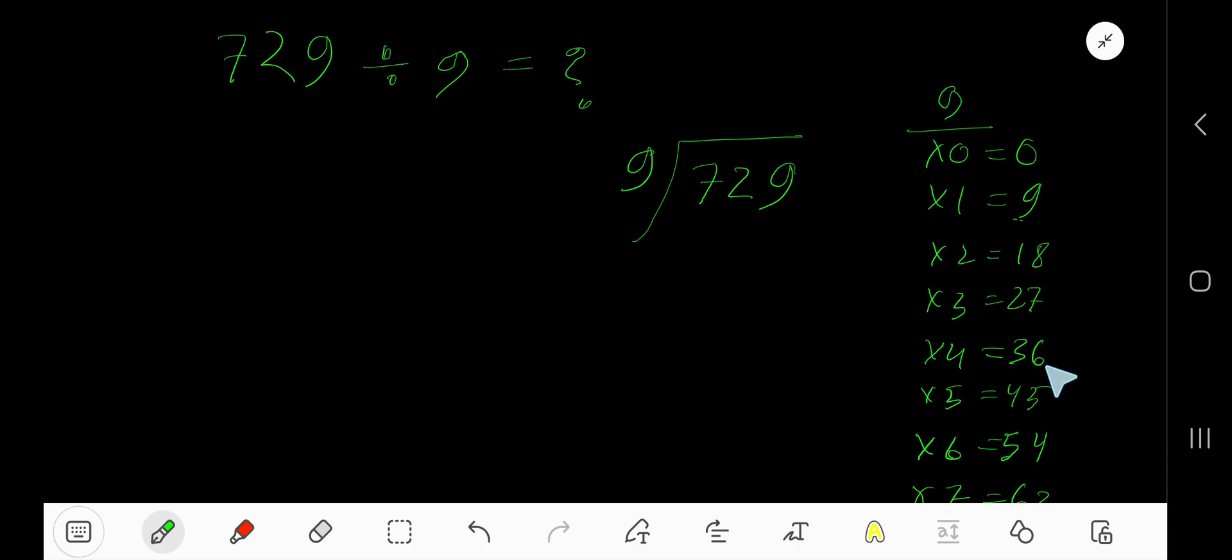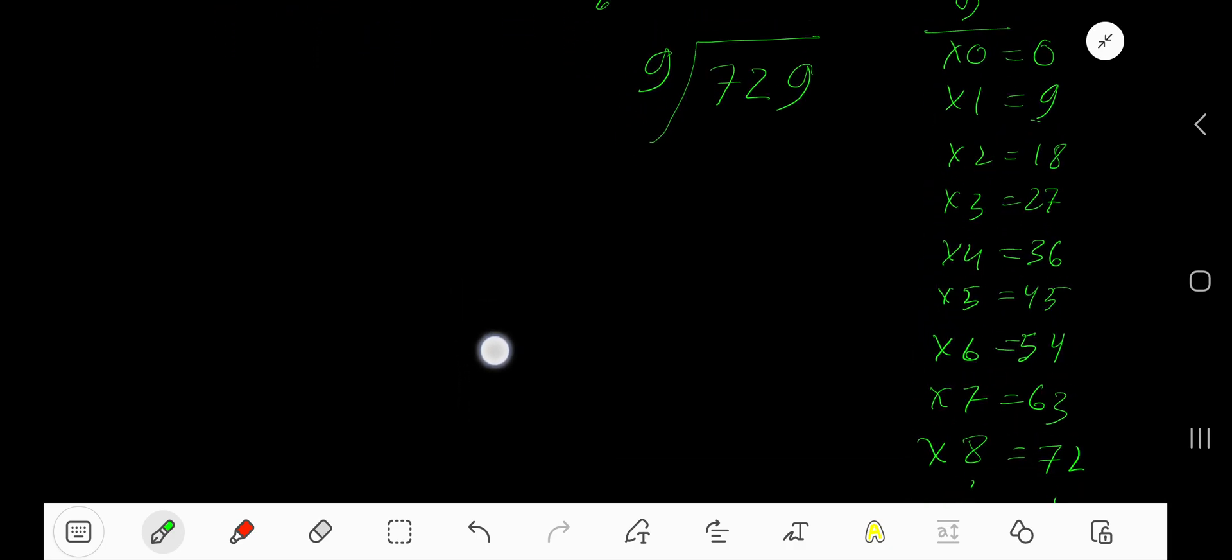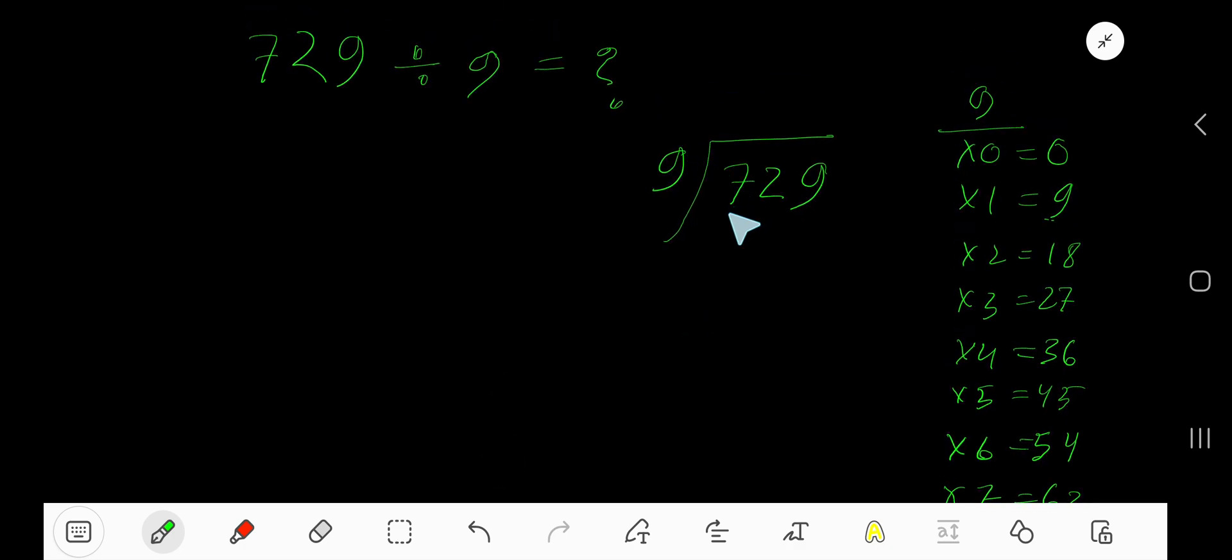27 plus 9 is 36, 36 plus 9 is 45, 45 plus 9 is 54, and this process will continue. 9 goes into this current dividend 7 how many times?